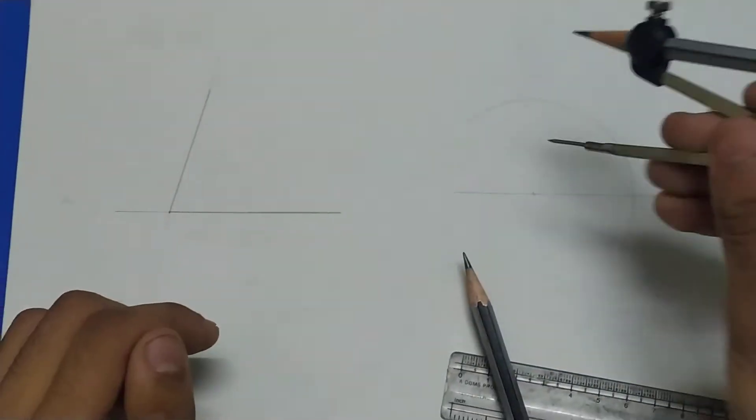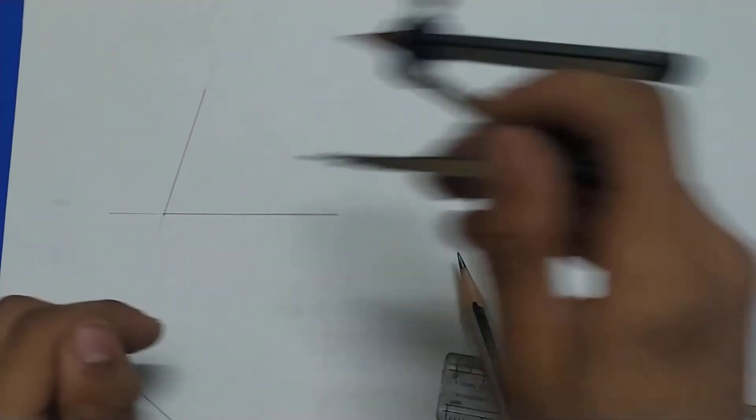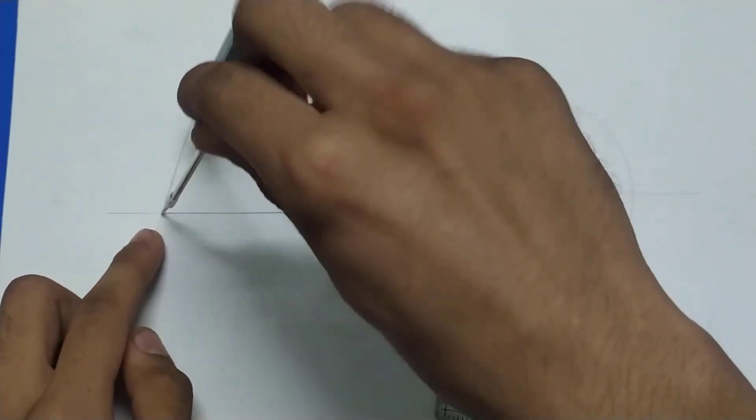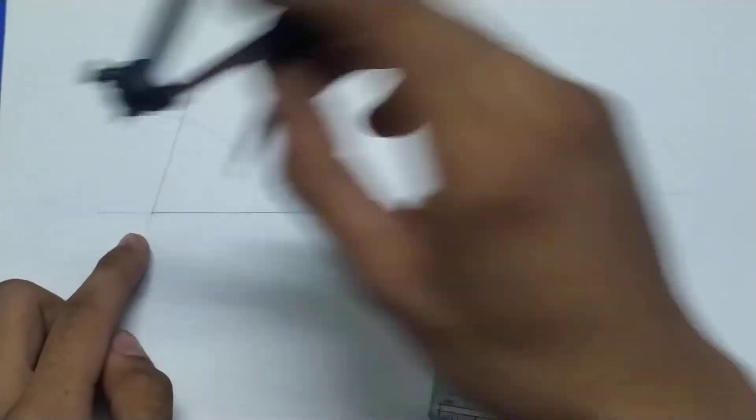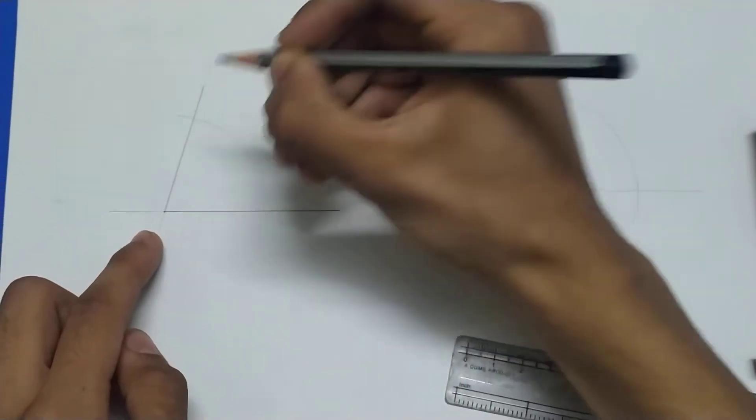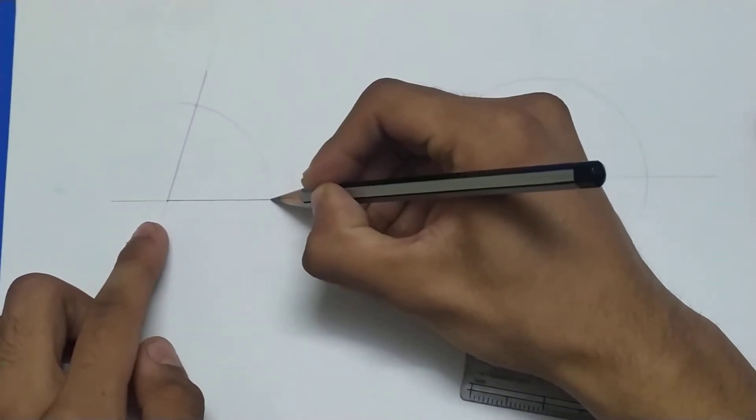Now, using the same measurement, you draw an arc on this angle so that it intersects both of its arms. Now you get these two points, this one right here and this one.